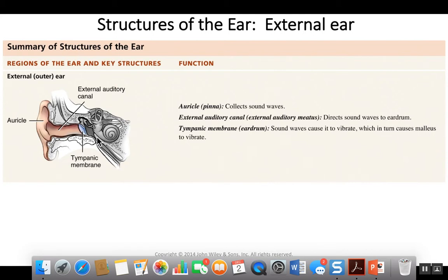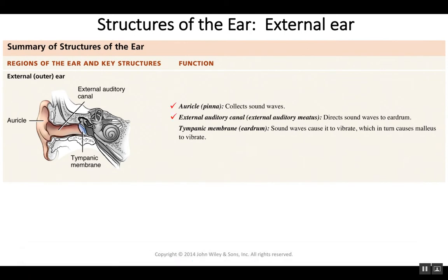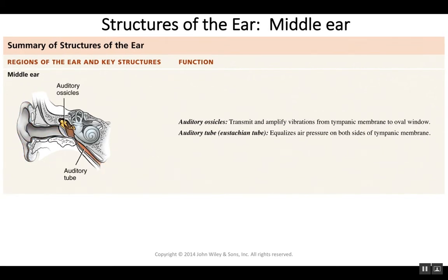So what has happened is sound waves have been converted into vibrations, which are now traveling into the middle ear using the auditory ossicles. Let's look at the middle ear. The middle ear is made up of the auditory ossicles and the eustachian tube, also known as the auditory tube.